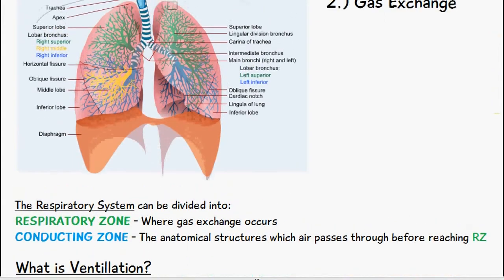An example can be the trachea is part of the conducting zone because it's not where the gas exchange actually occurs, but it is one of the structures which air will pass through.